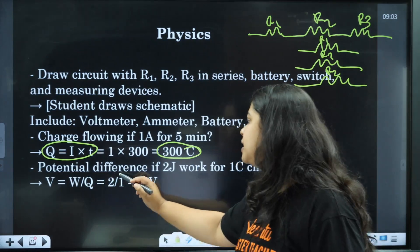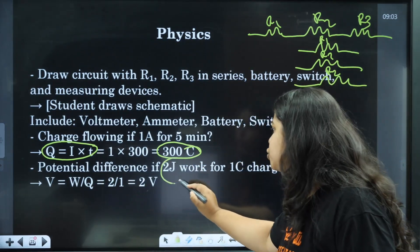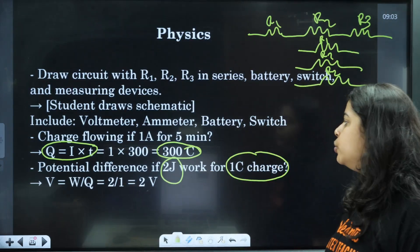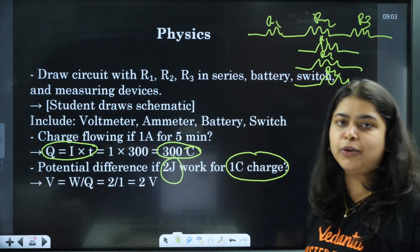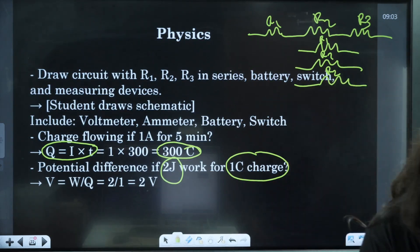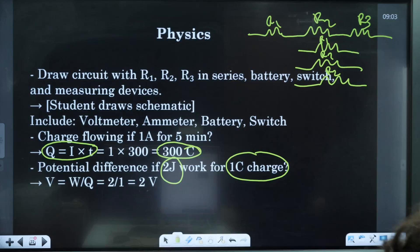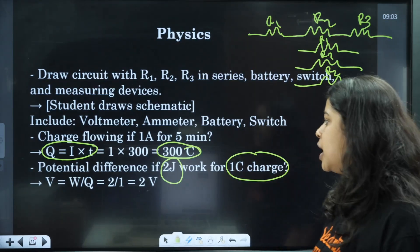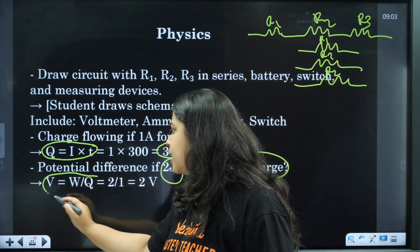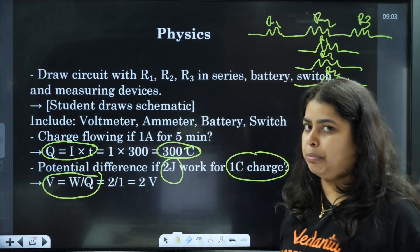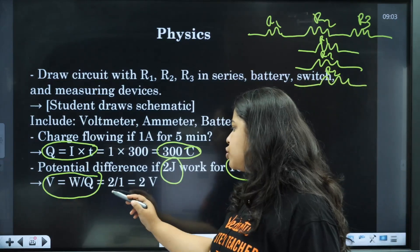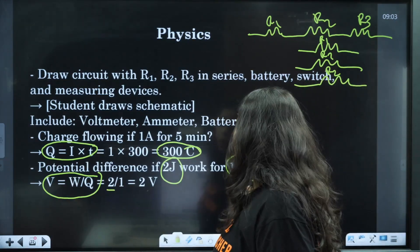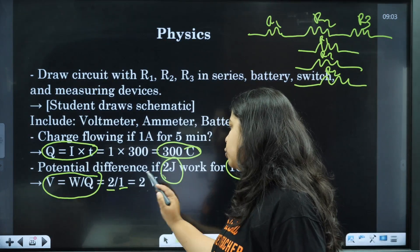Next, potential difference: if 2 joules of work is done for 1 coulomb of charge, using V = W / Q, substituting: V = 2 / 1 = 2 volts.